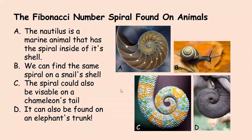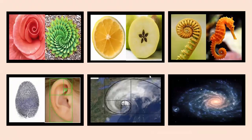Now that we've seen the spiral, let's look and see if we can find the same spiral on some animals. The nautilus shell is a marine animal that has a spiral inside its shell. We can find the same spiral on a snail shell too. The spiral is also visible on a chameleon's tail and an elephant's trunk when it's curled up. Here are more examples of the Fibonacci number sequence, pattern, and spiral: a rose, an aloe vera plant, the sections of a lemon, the seeds of an orange, the curl of a crozier fern, the tail of a seahorse, the whorl of our fingerprints, the shape of our ear, the curl of a tornado, and even a galaxy. Fibonacci is everywhere.